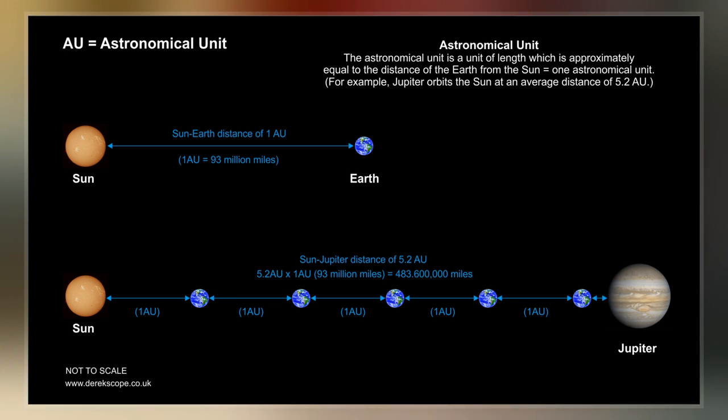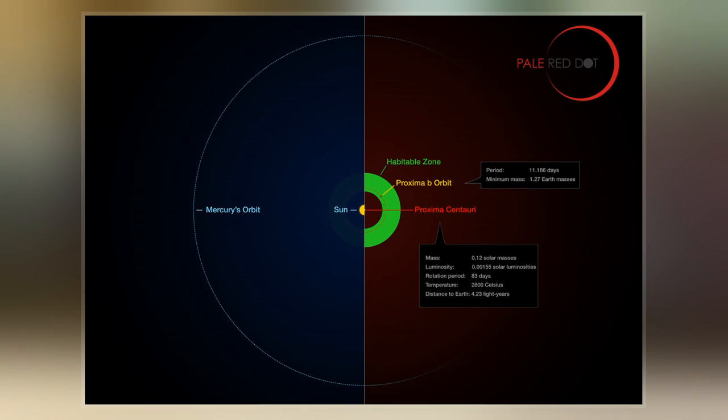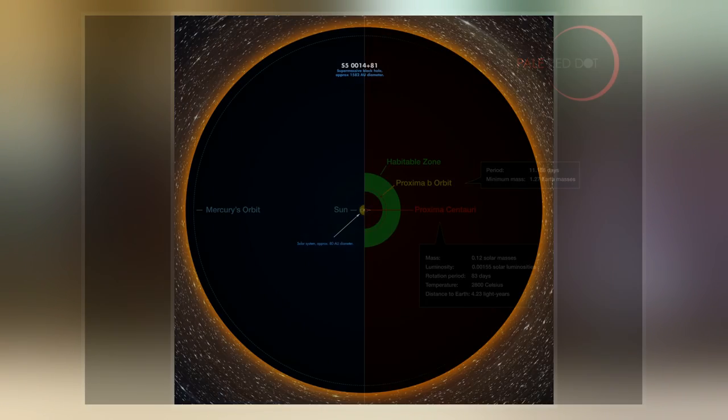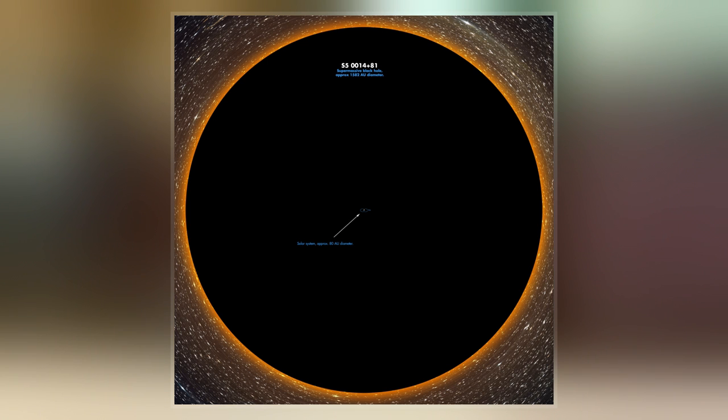A variety of unit symbols and abbreviations have been in use for the astronomical unit. In a 1976 resolution, the International Astronomical Union had used the symbol A to denote a length equal to the astronomical unit.